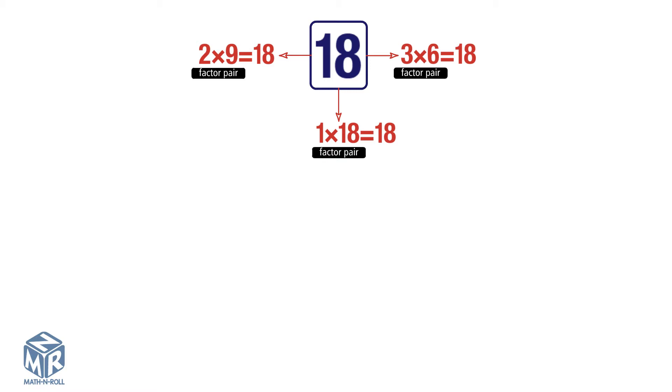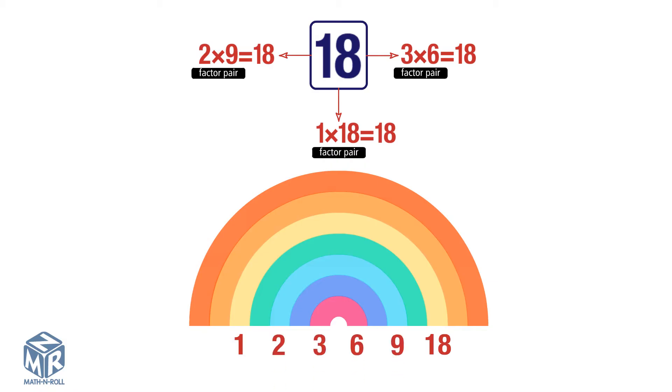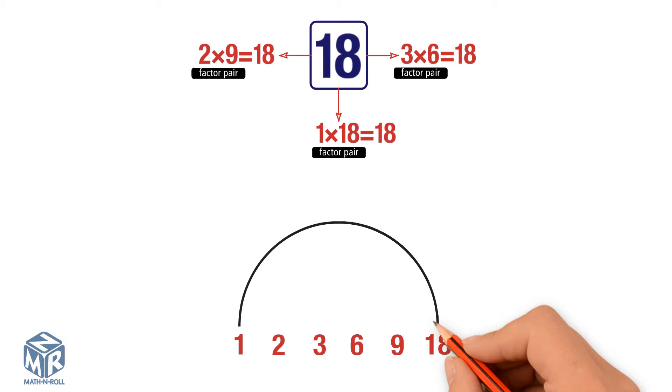Often times, factors are modeled using rainbows. We put 1 and the number on opposite sides of the rainbow. Then we write the next factor pairs in between. We represent the factor pairs using arcs. We connect 1 and 18 with an arc. We connect 2 and 9 with an arc, and 3 and 6. Using factor rainbows helps us order the factors from least to greatest.